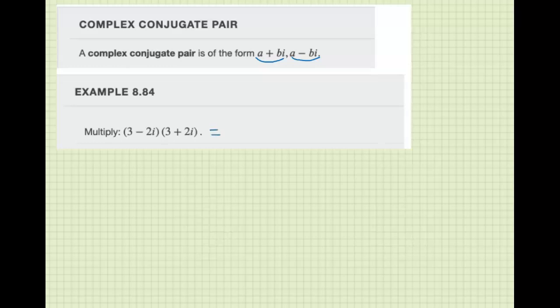This is a complex conjugate pair because we have the same values - three and three, two and two - but we have different signs. So we have three times three is nine, and then we have six i and negative six i, and then we have negative four i squared.